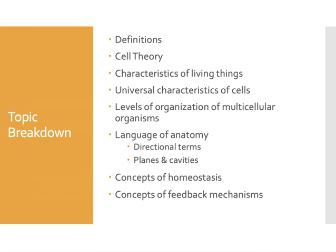We'll review the cell theory and the characteristics of living things, and we'll list the universal characteristics that all living cells share. We'll discuss the levels of organization found in multicellular organisms like human beings, and we'll talk about the language specific to anatomy, including directional terminology and the language of planes and body cavities. Finally, we'll discuss the concepts of homeostasis and feedback mechanisms.